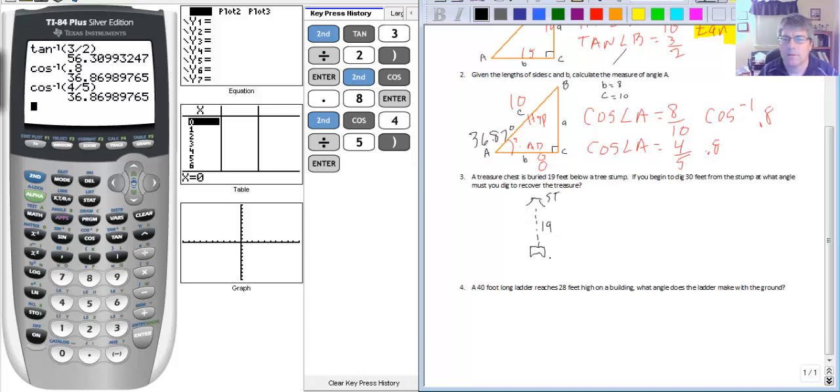Here's our treasure. If you begin to dig 30 feet from the stump at what angle must you dig to recover the treasure?